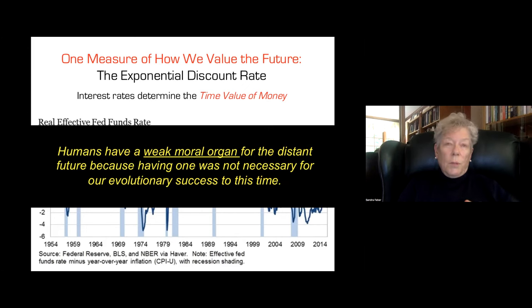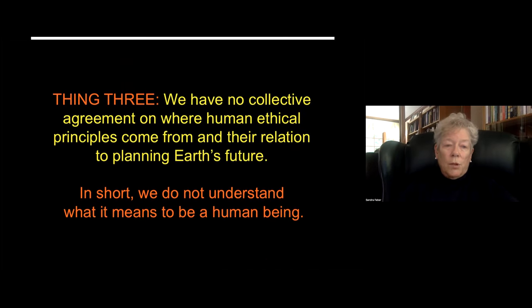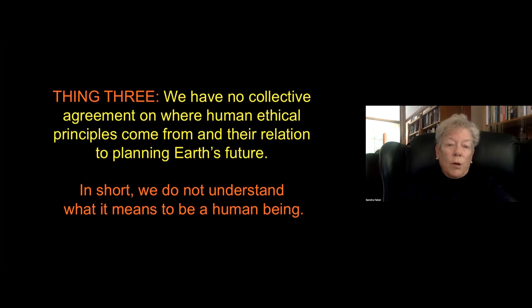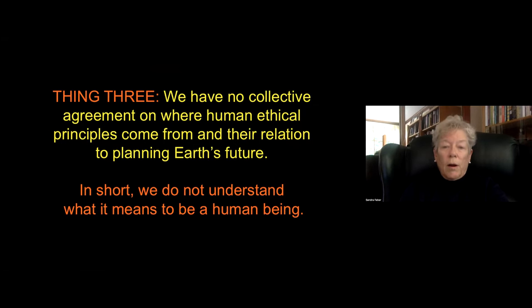But the problem is how much do we value those future generations? And that comes to the core of the human ethical system. We discount the future. An example is the exponential discount rate that we apply to the future value of money. That's often what we call the interest rate, or here I'm showing a slide of federal funds rate over the last 60 years or so, which is average 2%. What does this mean? It means that if somebody says, I'm going to give you $1 a year from now, you say, no, you're not.